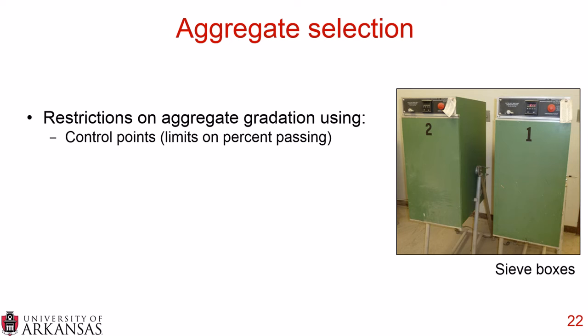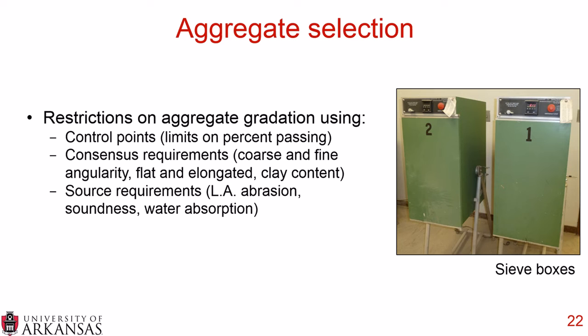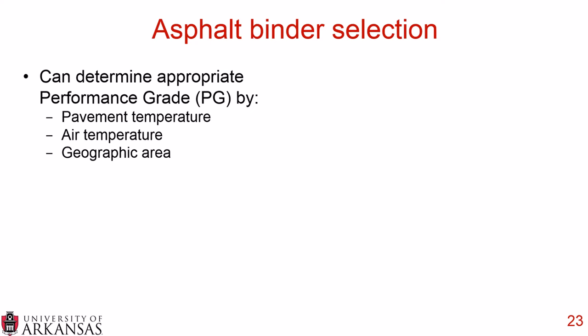For aggregate selection in Superpave, there are restrictions on aggregate gradation using control points — minimum and maximum limits on percent passing. You have consensus requirements for properties you can change, including coarse and fine aggregate angularity, flat and elongated particles, and clay content. You also have source requirements which you cannot change, including LA abrasion, soundness, and water absorption. For the asphalt binder, you determine the appropriate performance grade (PG) binder by pavement temperature, air temperature, and geographic area.